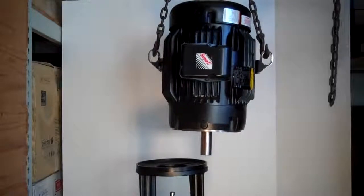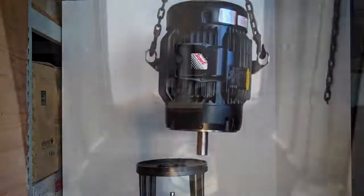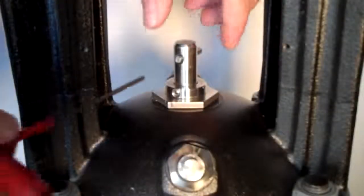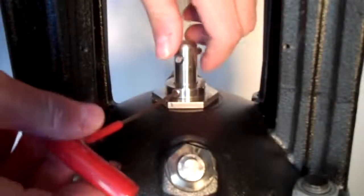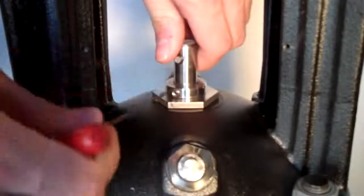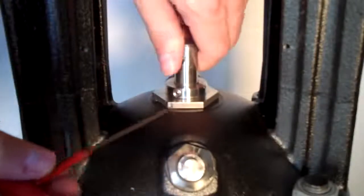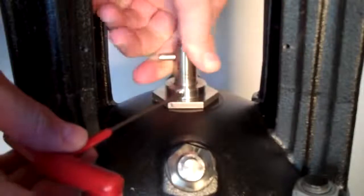To remove the shaft seal, we'll start by taking out these three set screws. Just loosen them, they don't need to be removed. And we'll pull out the shaft pin.